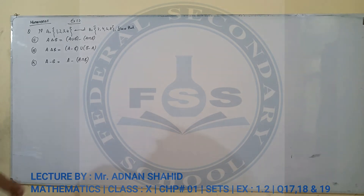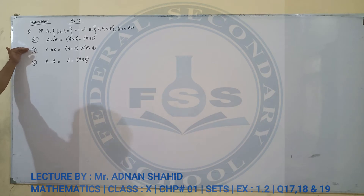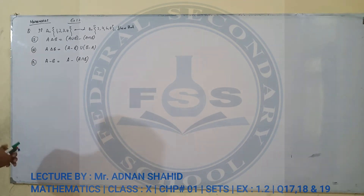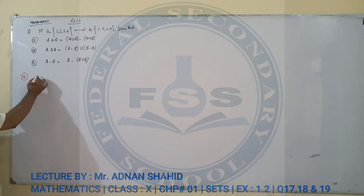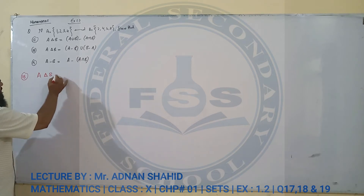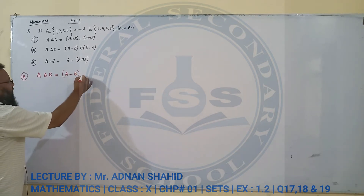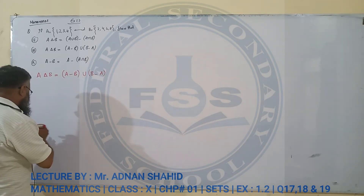ये तीन सवालात प्रूफ करने हैं। इसमें से मैं सबसे पहले question number 18 को उठा रहा हूँ। Question number 18 में कहता है — गौर कीजेगा — A का जो B के साथ symmetric difference है वो बराबर होना चाहिए A minus B union B minus A के।